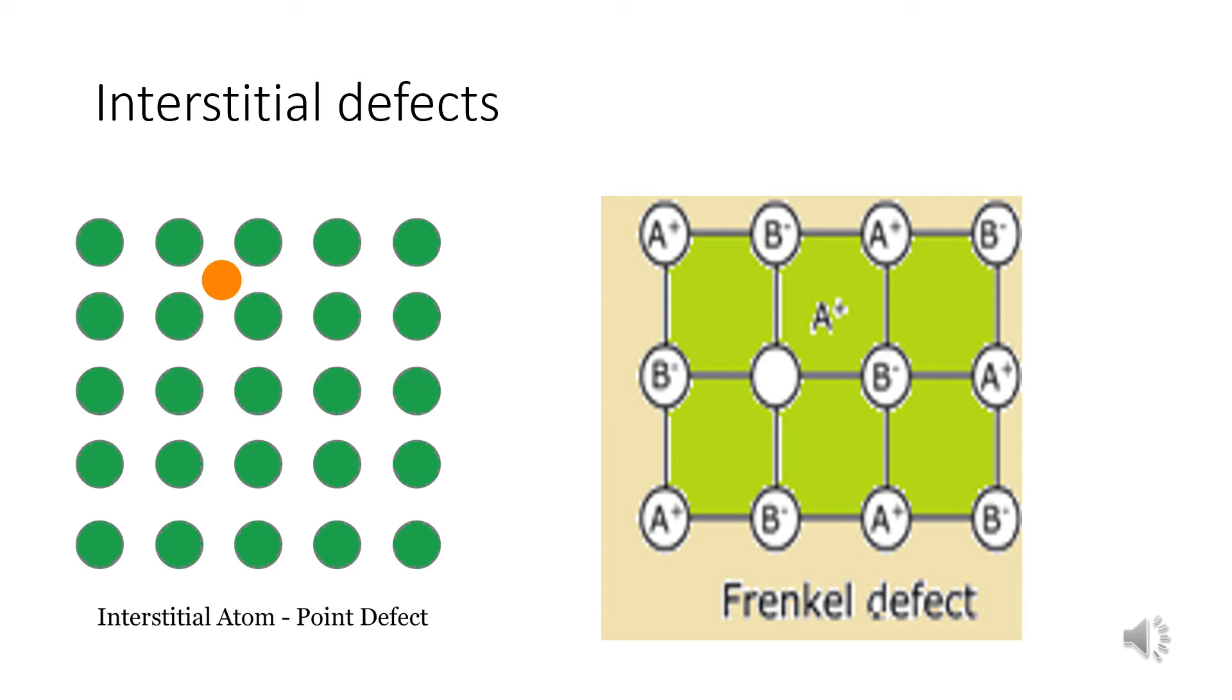We already studied, silver bromide shows both Schottky defect and Frenkel defect. So, one of the Ag+ ion occupies a position in the interstitial space rather than its own appropriate site in the lattice. Another example is zinc sulfide,